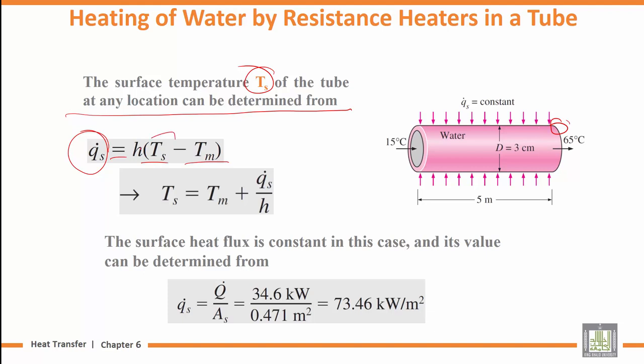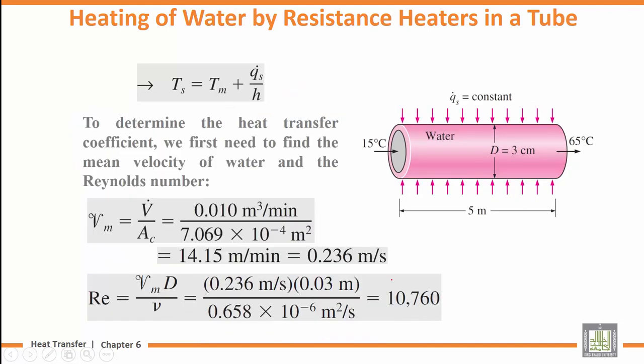T_s equals T_m plus Q dot divided by h times service area. We know the heat transfer rate from the heater and the service area of the pipe. Now we need to find h, the heat transfer coefficient. To determine h, we first need to find the mean velocity of water and the Reynolds number.